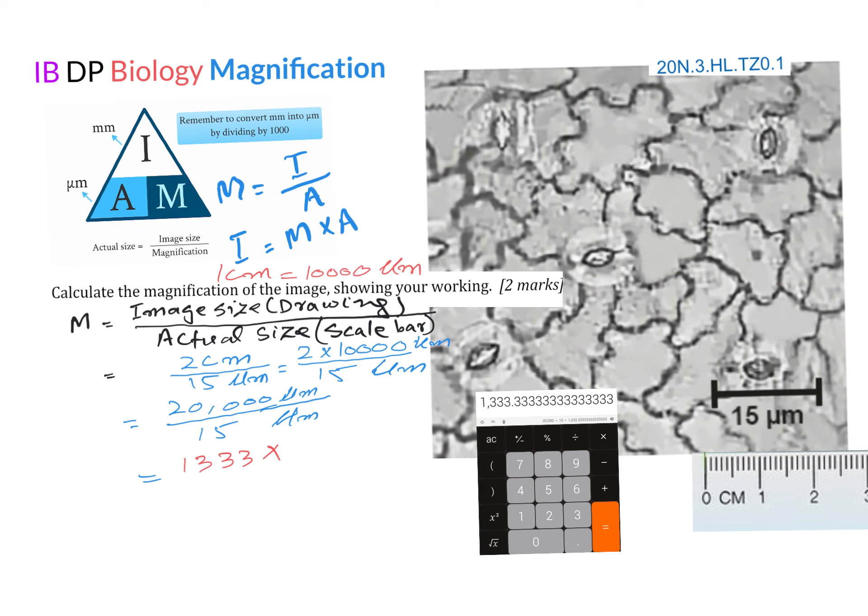If magnification, then image divided by the actual size. And if image size, this means magnification multiplied by the actual size. So in this question we have to calculate the magnification.